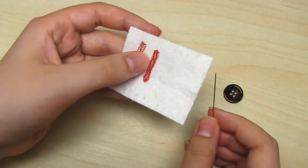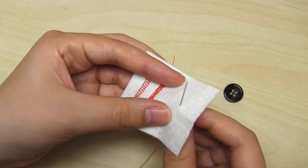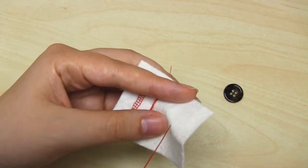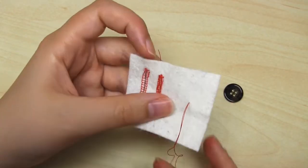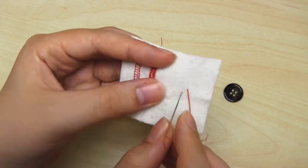Right, so now I'm going to attach a four-hole button to a piece of felt. The first thing you need to do is sew a cross on the front of your fabric. The center of this cross is where the center of the button is going to be positioned.